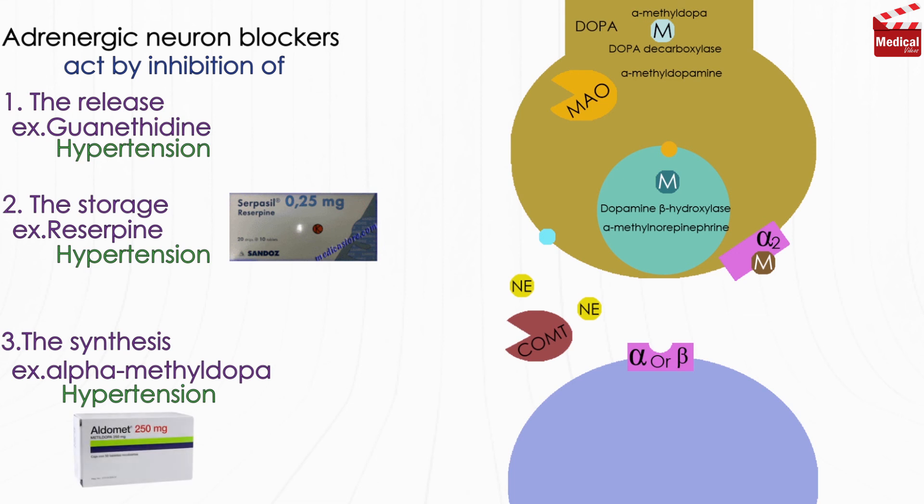And the most important thing you should know about alpha-methyldopa is that it is one of the preferred treatments for high blood pressure in pregnancy.